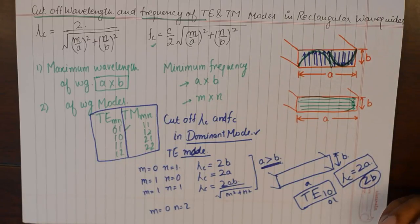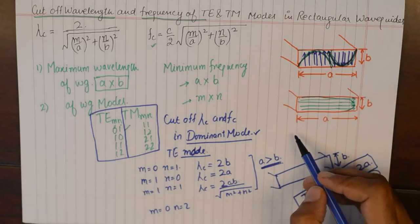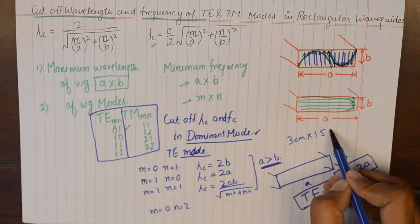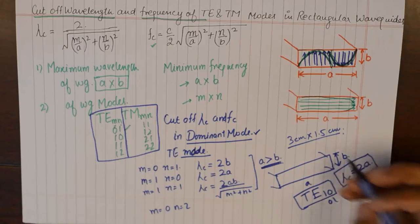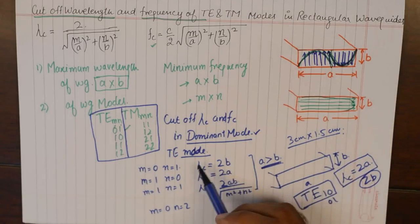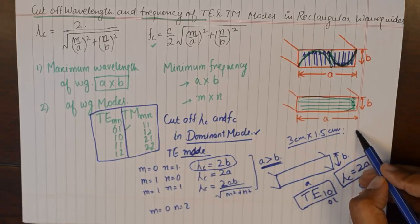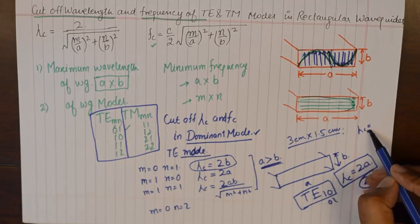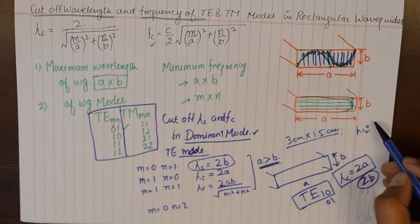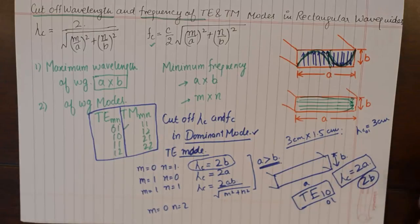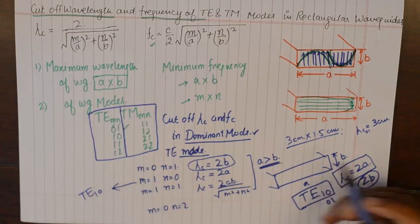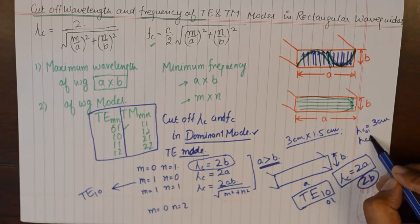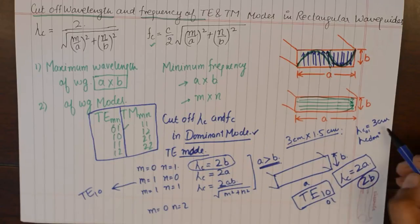For a quick numerical example: for a waveguide of 3 cm by 1.5 cm, the cutoff wavelength in TE01 mode is twice of B, which is 3 cm. The cutoff wavelength in dominant mode — automatically understood to be TE10 — becomes twice of A, which is 6 cm.